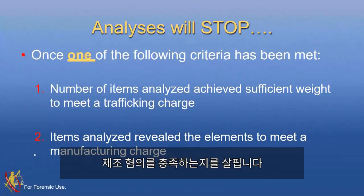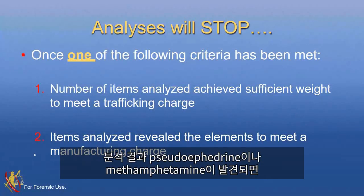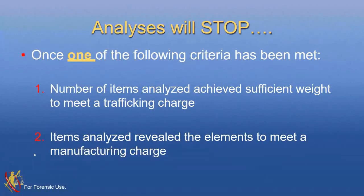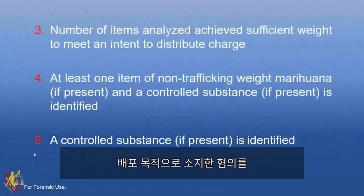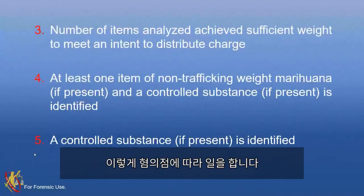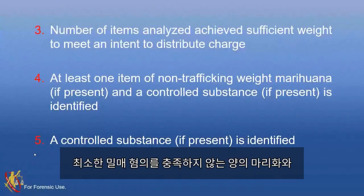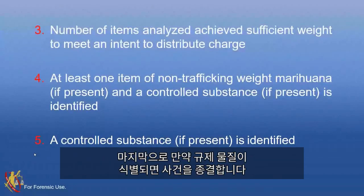If it takes 300 tablets to get to second-level trafficking, then we will analyze all 300 tablets, which can be quite an undertaking if you have to make 300 injections on the GC-MS. Next criteria: if the number of items analyzed reveal the elements to meet a manufacturing charge. So if we're looking at a clandestine laboratory and we find pseudoephedrine and methamphetamine, we'll stop our analysis then. We also look at whether sufficient weight is achieved for an intent to distribute charge, or if at least one non-trafficking weight marijuana and controlled substance is identified, or simply once the controlled substance is identified.